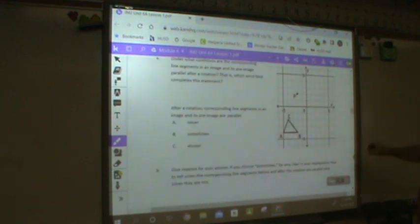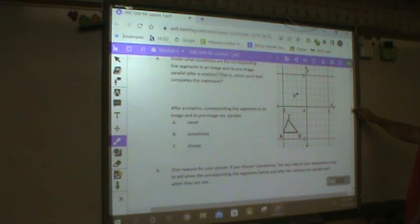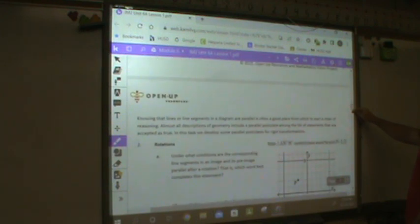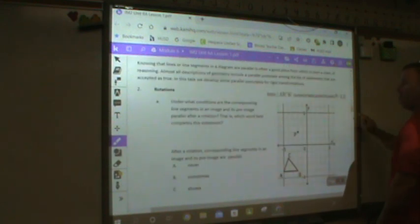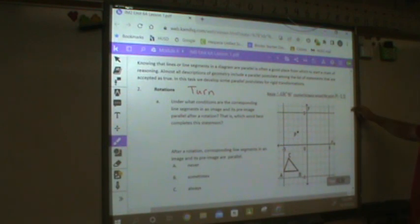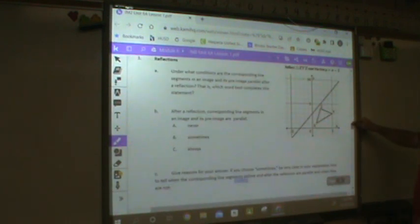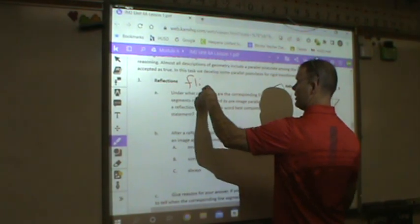When we get to a rotation, rotations are a little bit tough, especially when they're not about the origin. But a translation, what was a key word? This doesn't want to cooperate. With a rotation, it was a turn, right? We can say rotations are turns. Again, yes, I'm going through this very quickly on purpose.